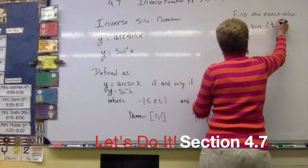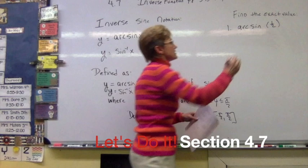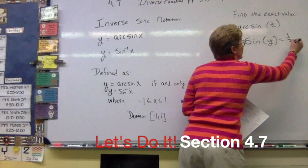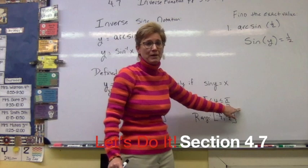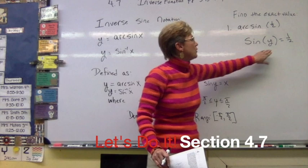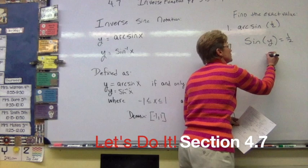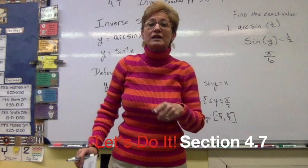Find the arc sine of one half. Basically, what this is saying is: the sine of what angle is equivalent to one half? And remember, that angle has to be located between negative pi over two and positive pi over two. We go back to our special angle sheet, and the first quadrant angle where sine is equivalent to one half is pi over six. Always give that answer in radian measurements.